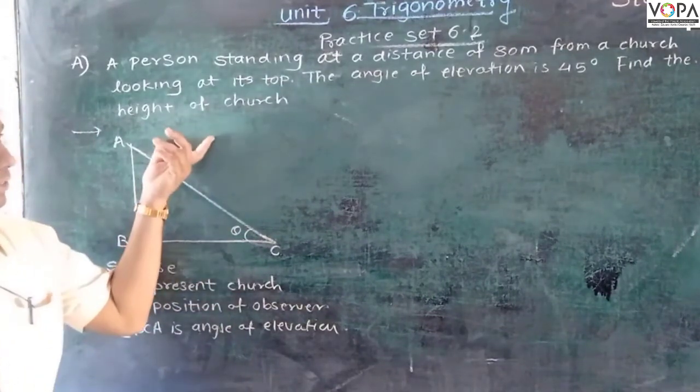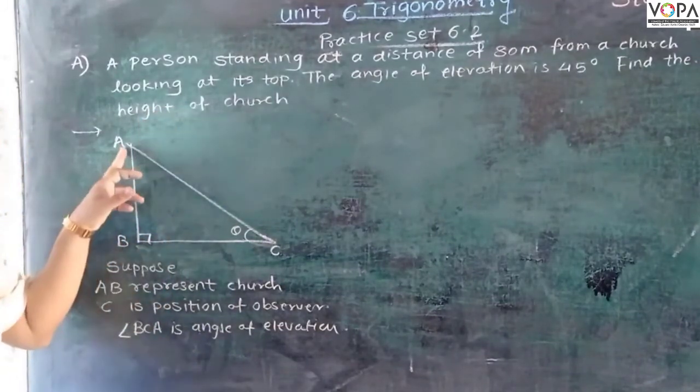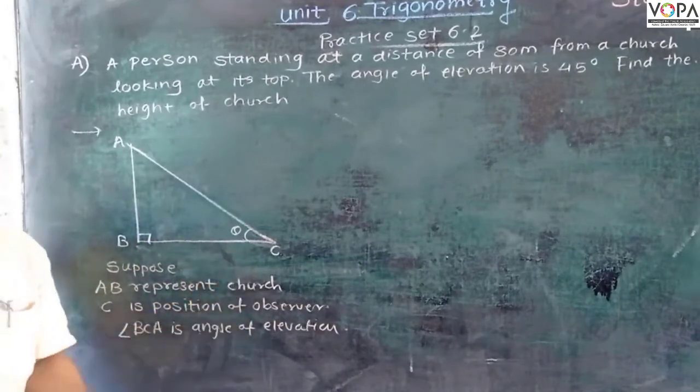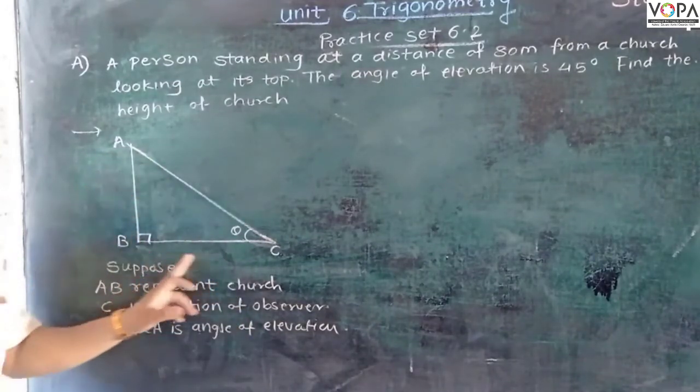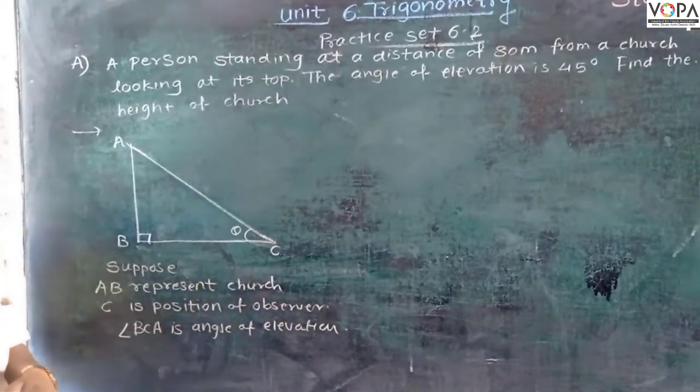So here we want to calculate the height of the church. In this triangle, we can make a figure given as ABC. AB is the height of the church, it represents the height of church.